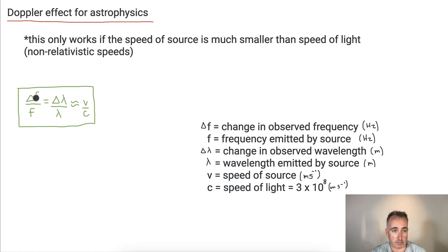So what do all these things mean? This is a change in observed frequency. So what you actually receive versus what was emitted. You would do those two subtracted from each other to get delta F.